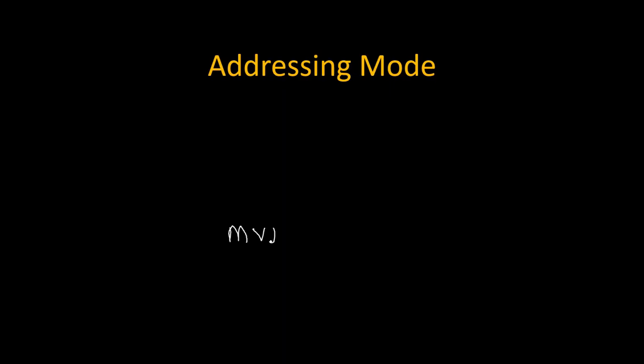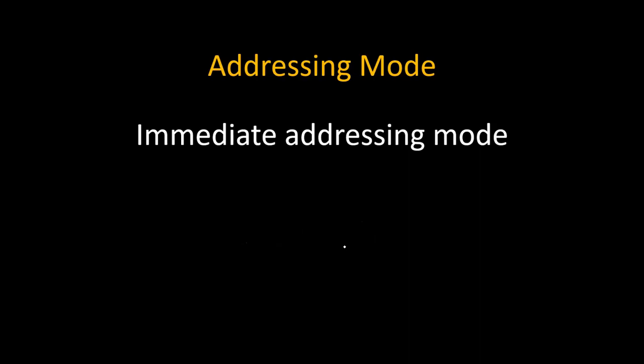Now let's talk about the addressing mode of this instruction. The addressing mode totally depends on what the operand is. In MVI, R is the opcode and data is the operand. Whenever data is the operand, its addressing mode becomes immediate addressing mode. Whenever you see data in the instruction, its addressing mode will be immediate.